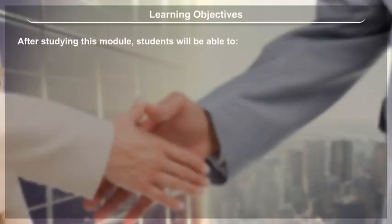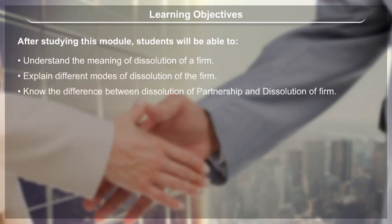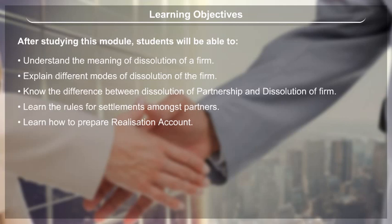Learning Objectives. After studying this module, students will be able to: understand the meaning of dissolution of a firm; explain different modes of dissolution of the firm; know the difference between dissolution of partnership and dissolution of firm; learn the rules for settlements amongst partners; learn how to prepare realization account; and learn about the different journal and ledger entries.